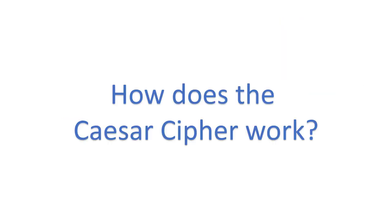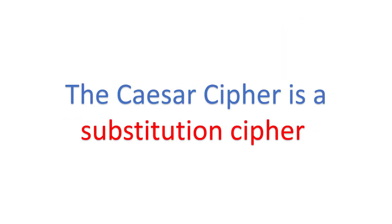How does the Caesar cipher work? Well, the Caesar cipher is a simple substitution cipher. It basically substitutes one letter of the alphabet for a different letter of the alphabet.